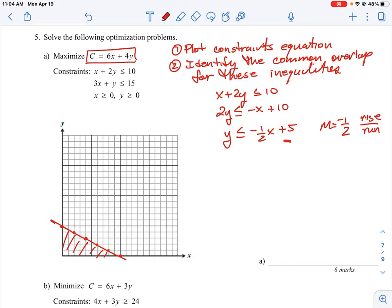So if we were going to look at the next one here, this is 3x plus y is less than or equal to 15. And we can again put this into slope intercept form, where we're going to subtract 3x, so we're going to have y is less than negative 3x plus 15.